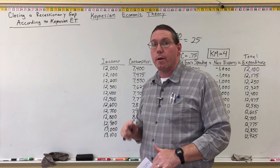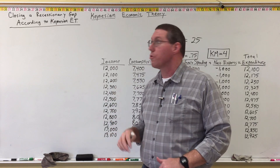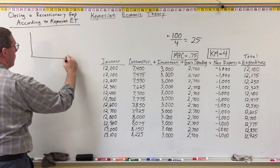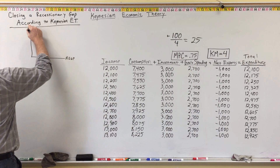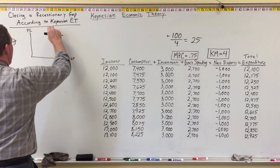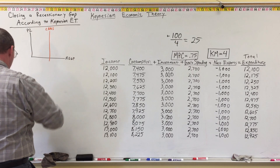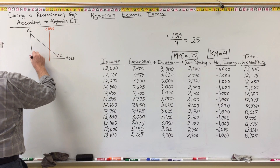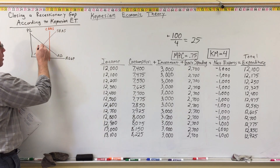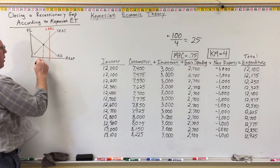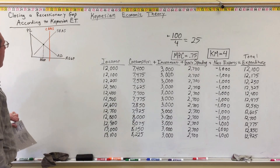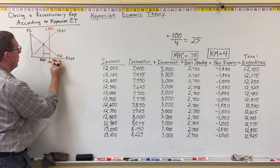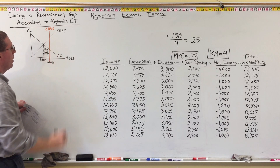Now I'm going to show you how Keynesian economic theory explains how to close a recessionary gap in the economy. Let's say the economy is in a recessionary gap. We've got real GDP here, price level here. Let's put in our long-run aggregate supply curve, our aggregate demand curve, and our short-run aggregate supply curve. Short-run equilibrium is right here, and real GDP is here. We are in a recessionary gap because real GDP is less than natural real GDP. That's a problem.